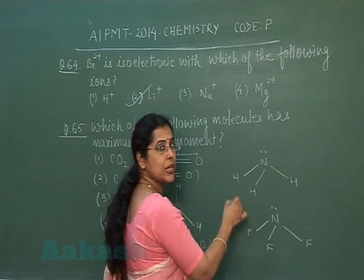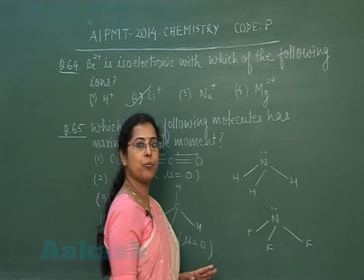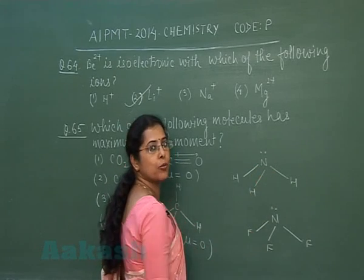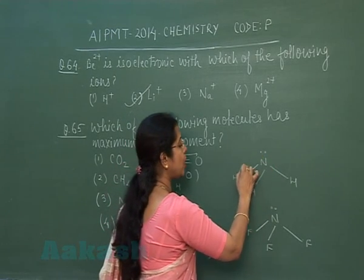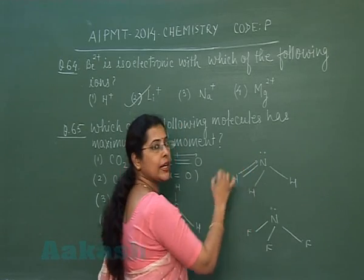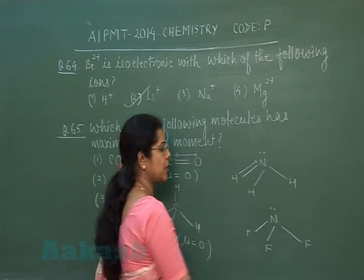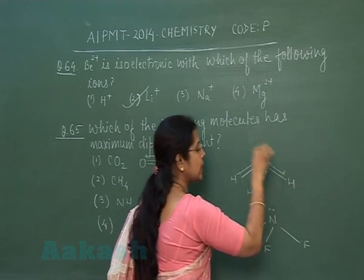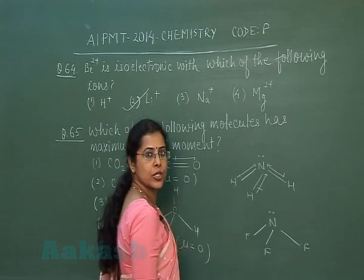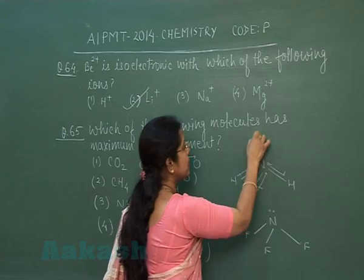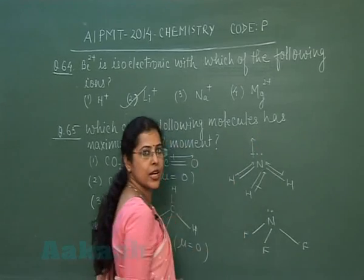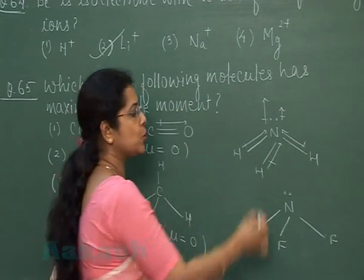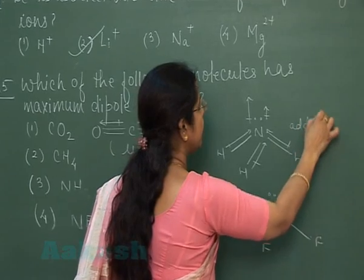Dipole moment can be compared by considering the structure of the compound. In the case of ammonia, the N–H bond is polar and polarity is assigned towards nitrogen. These three bond dipoles are aligned towards nitrogen, and the resultant is in the same direction as the lone pair electron displacement. This is called the additive effect.